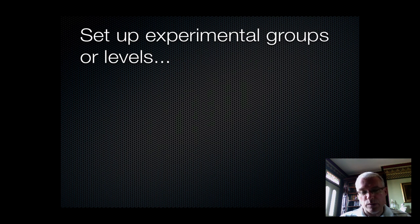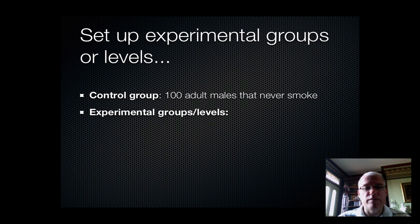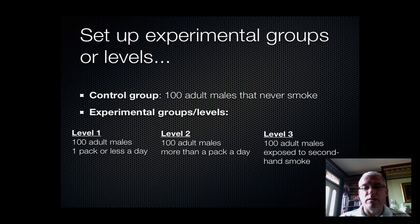To set up an experimental situation, we've got to decide on our groups, or levels. The most important is the control group — for us, that's the group of people not exposed to the independent variable, which is cigarette smoke. Then we set up three experimental groups. Level one is adult males smoking a pack or less a day. Level two is adult males smoking more than a pack a day. Level three is adult males exposed to secondhand smoke. We have three levels dealing with our independent variable, and a control group to compare them to, where adult males are not exposed to cigarette smoke.